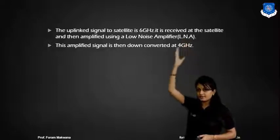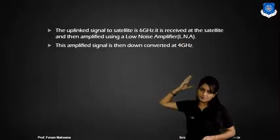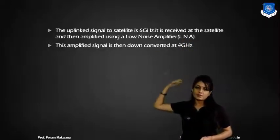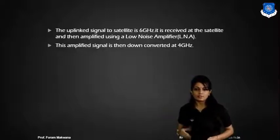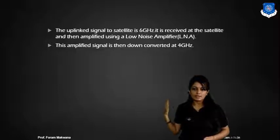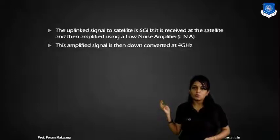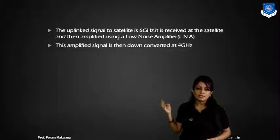It is received at the satellite and amplified using the low noise amplifier. It is then down converted to 4 GHz. The frequency bands used include L, S, C, and X bands. C band is used here.